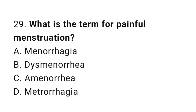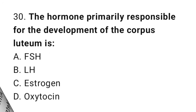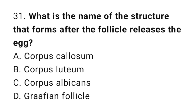Question number 29: What is the term for painful menstruation? The correct answer is B, dysmenorrhea. Question number 30: The hormone primarily responsible for the development of the corpus luteum is? The correct answer is B, LH. Question number 31: What is the name of the structure that forms after the follicle releases the egg? The correct answer is B, corpus luteum.